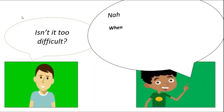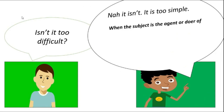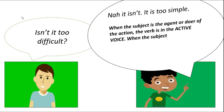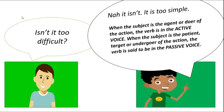Isn't it too difficult? Nah, it isn't. When the subject is the agent or doer of the action, the verb is in the active voice. When the subject is the action, the verb is said to be in the passive voice.